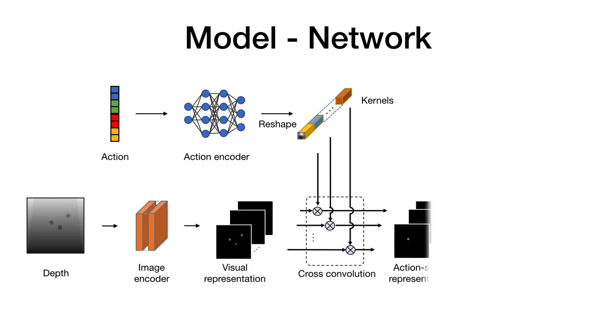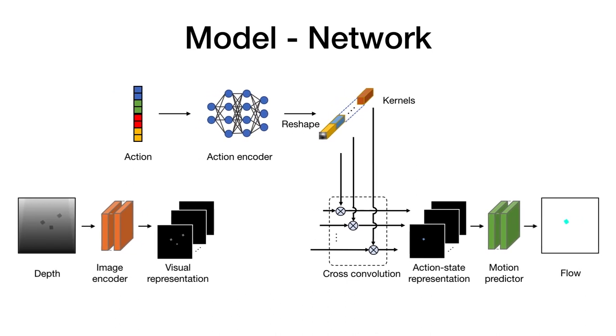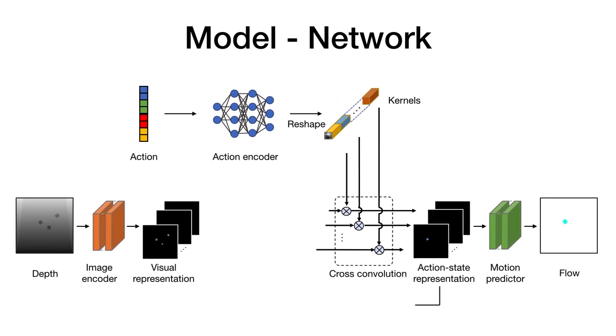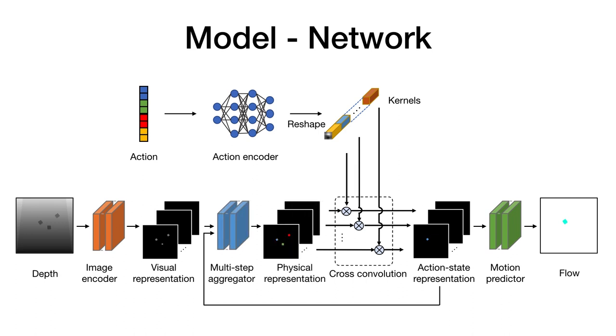The two representations are combined with cross-convolution to generate a state-action representation that is then fed into a motion predictor network to predict the change in state. We represent the changes in state using pixel-wise optical flow. To aggregate the information from past interactions, the multi-step aggregator learns to integrate the visual representation with the object representation after the last interaction.